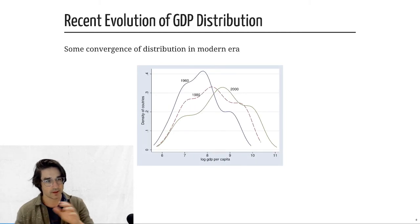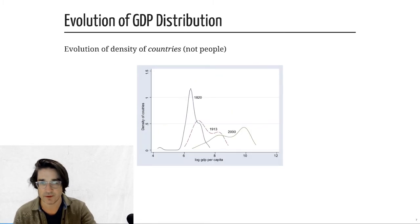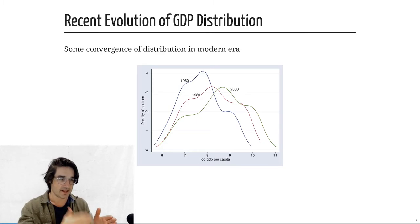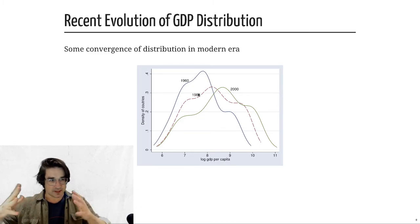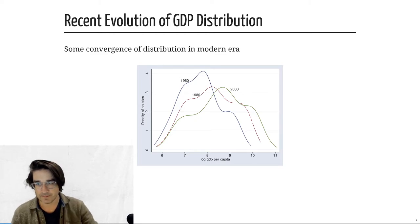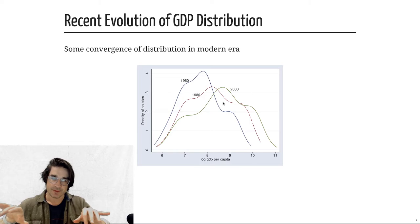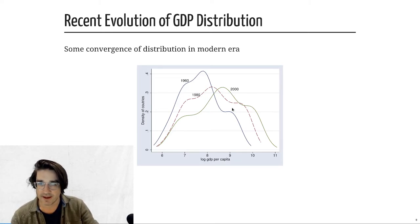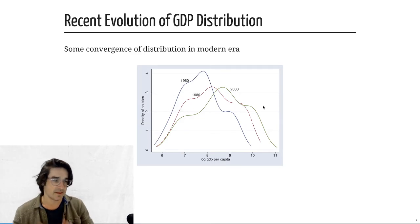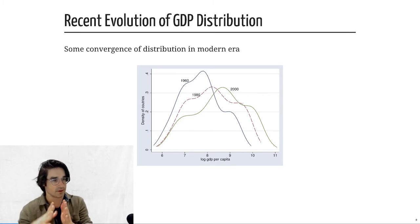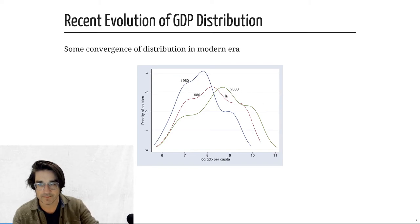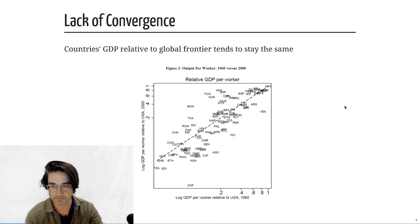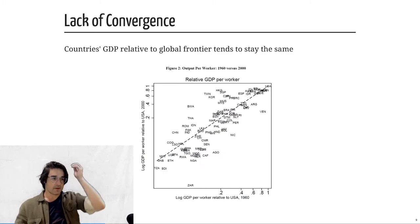Zooming in on the more recent era — 1960, 1980, 2000 — you still see two shoulders in the distribution. But there's a group of countries that moves from the left toward the right between 1960 and 2000, and that's largely East Asian countries moving from relatively poor to relatively richer, though not all the way to the top.